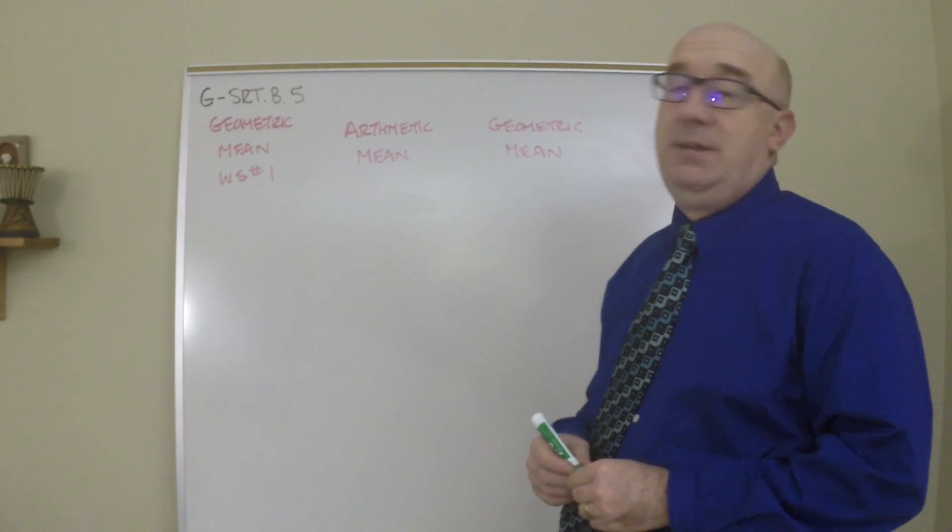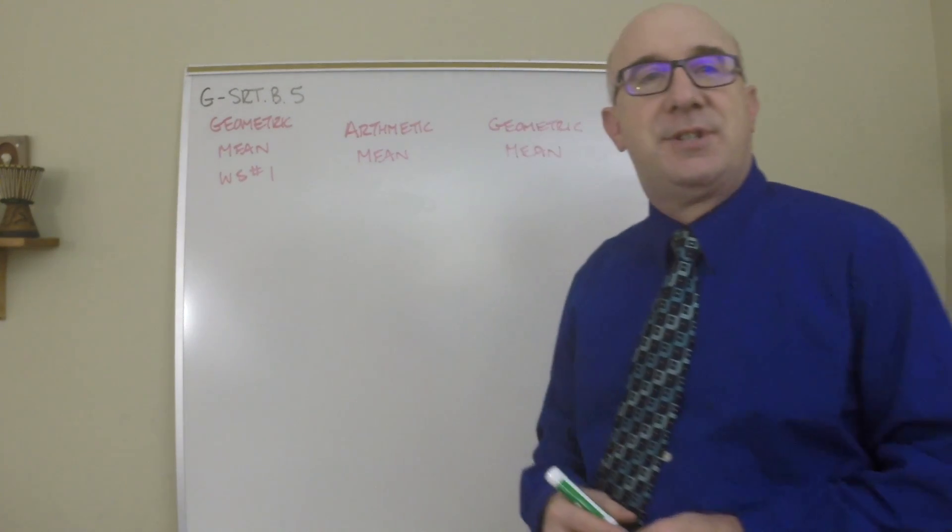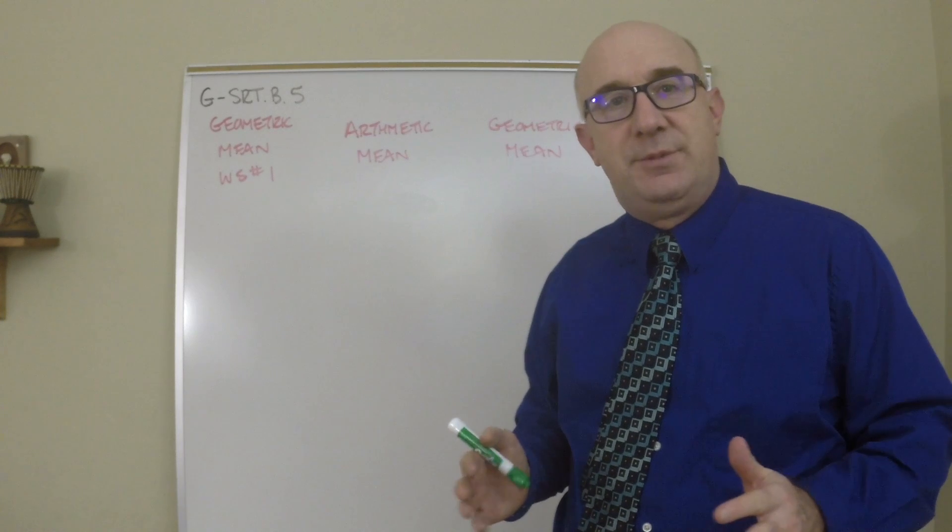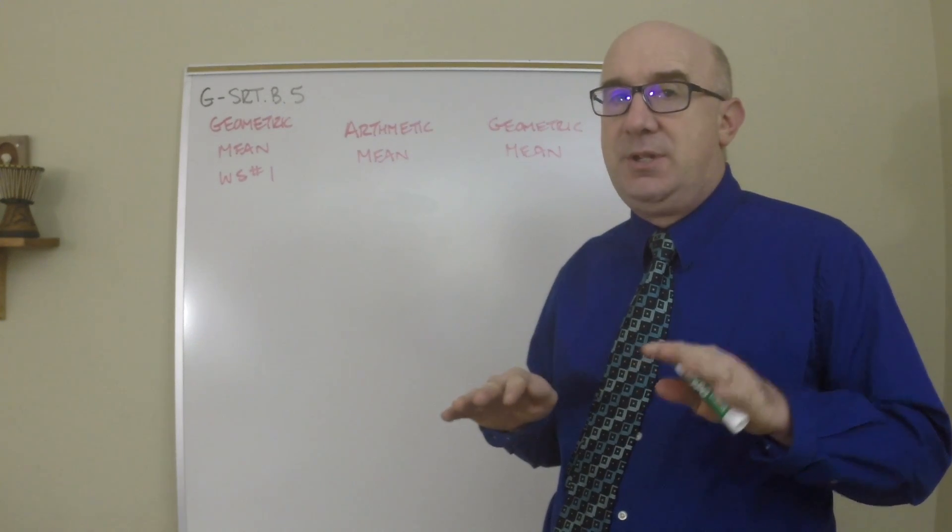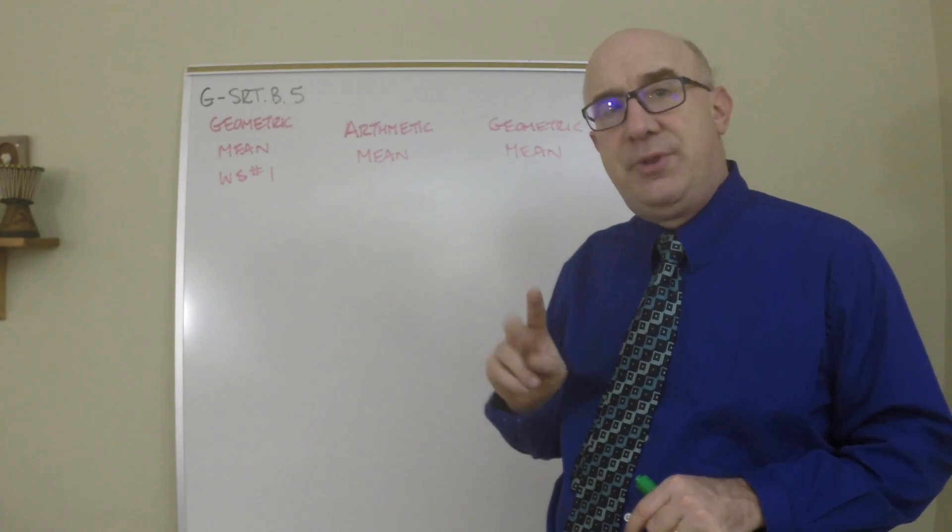This is GSRTB5. The objective here says to establish things using similarity and congruence, which is such a vague objective. Over the years I've learned that the best bridging between similarity to trigonometry, which is where we're going, are two things.